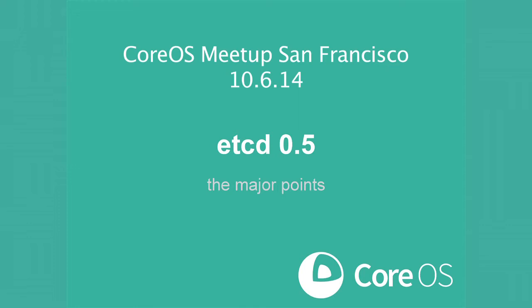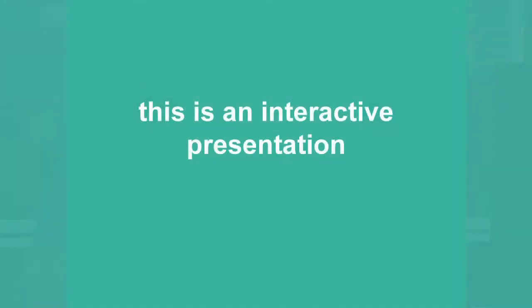I'm going to talk through etcd 0.5, which is the next major release of etcd. This isn't a bullet-point-by-bullet-point talk, so if you have questions while I go along, please ask. I just wanted to talk through the considerations we took as we figured out what we wanted to accomplish and the things we did to fix problems.